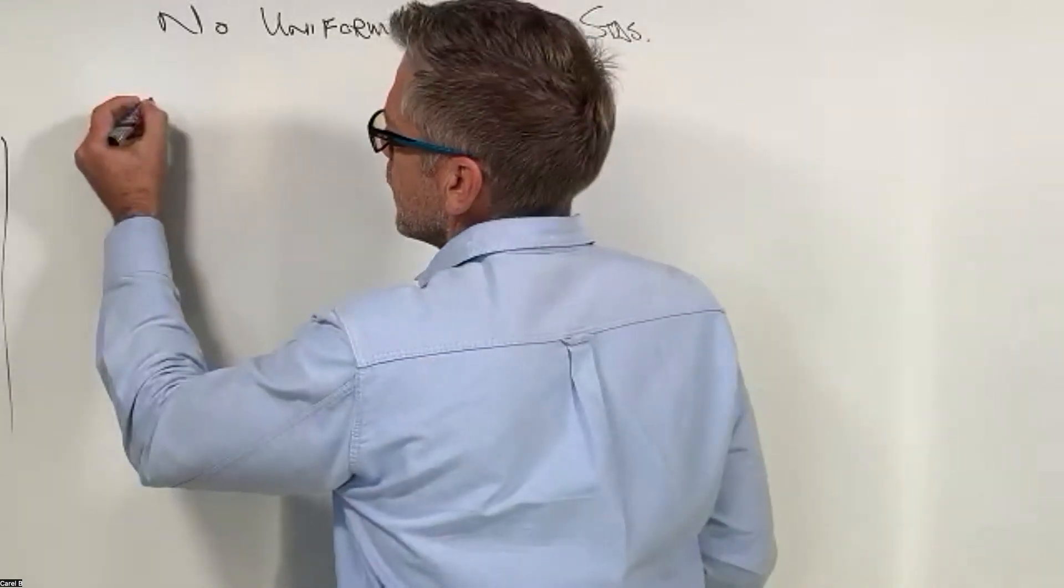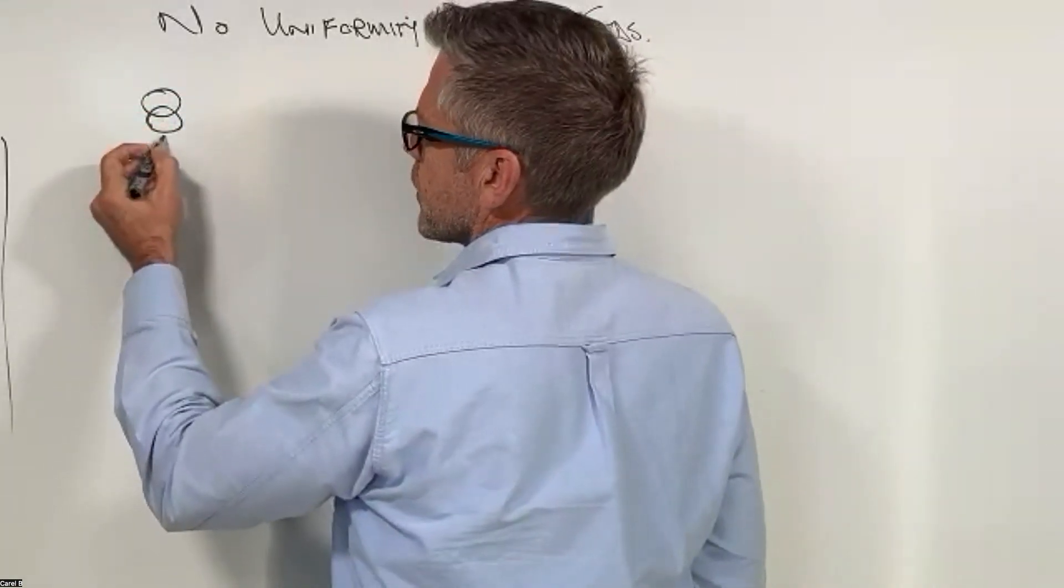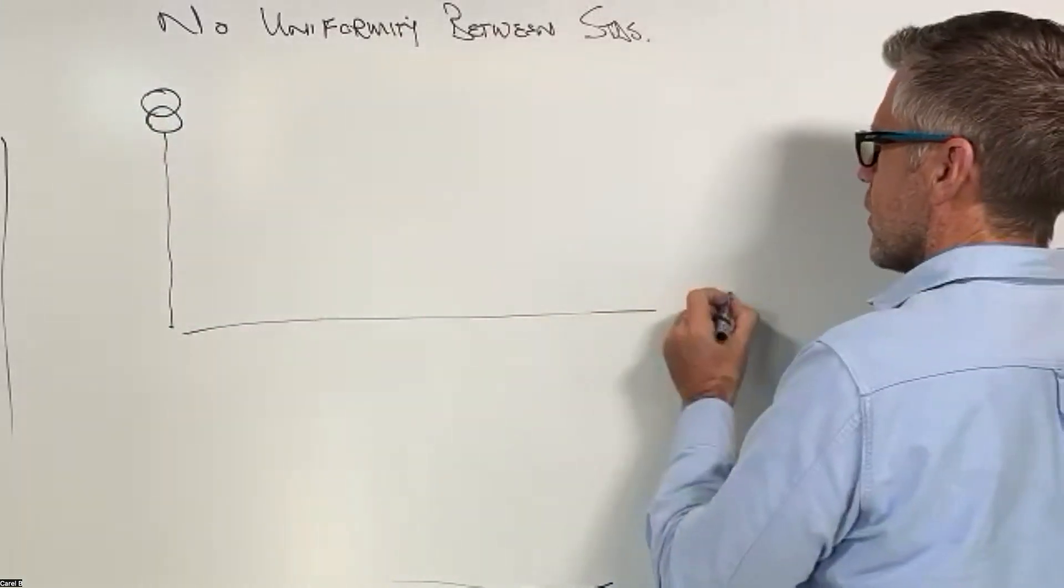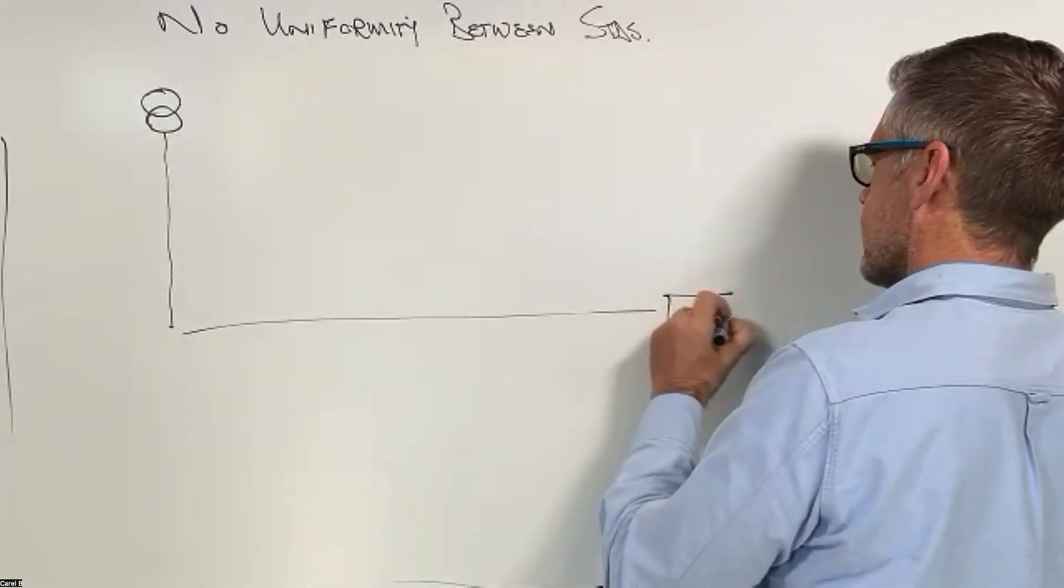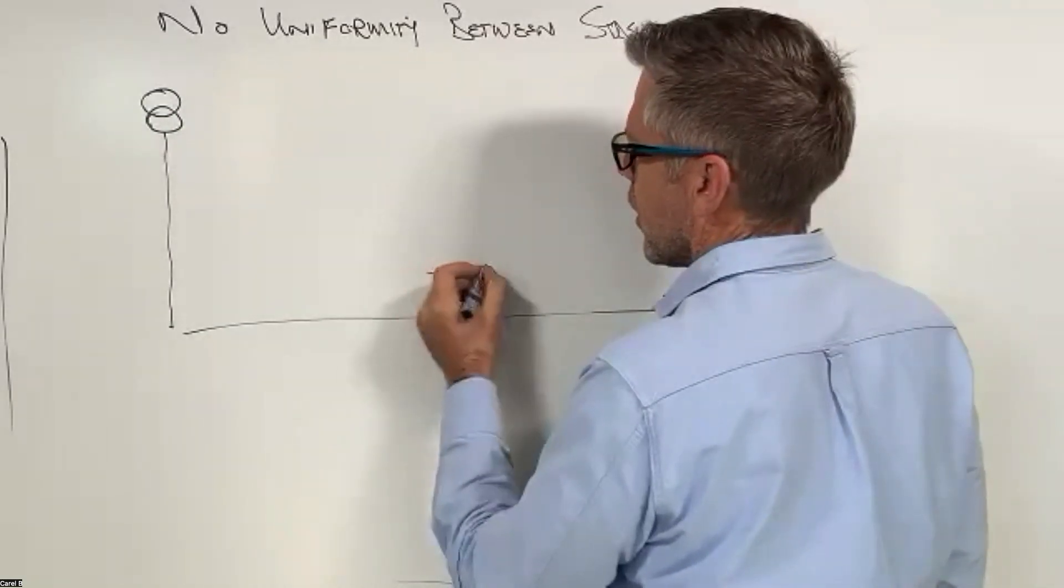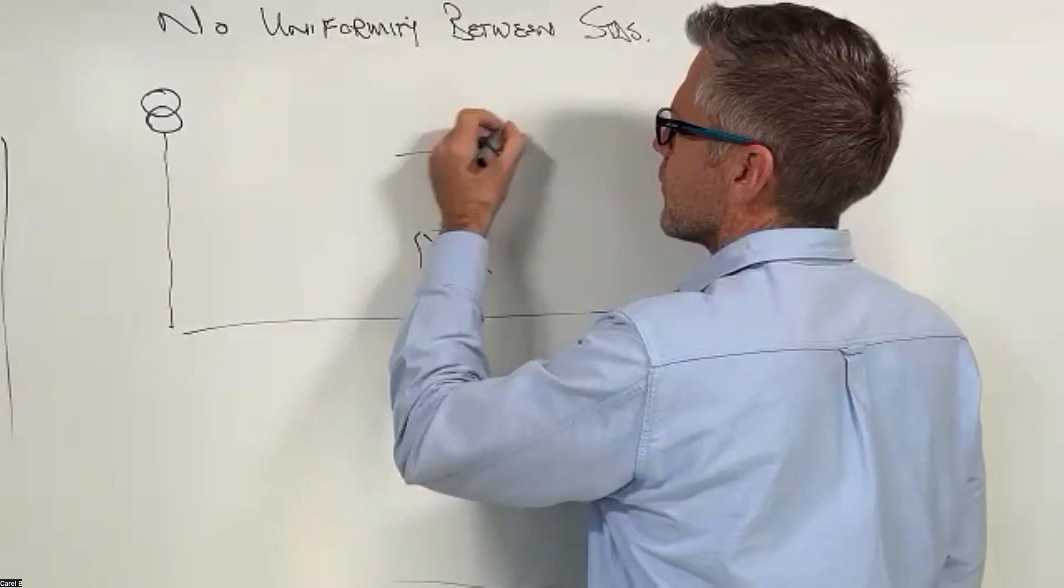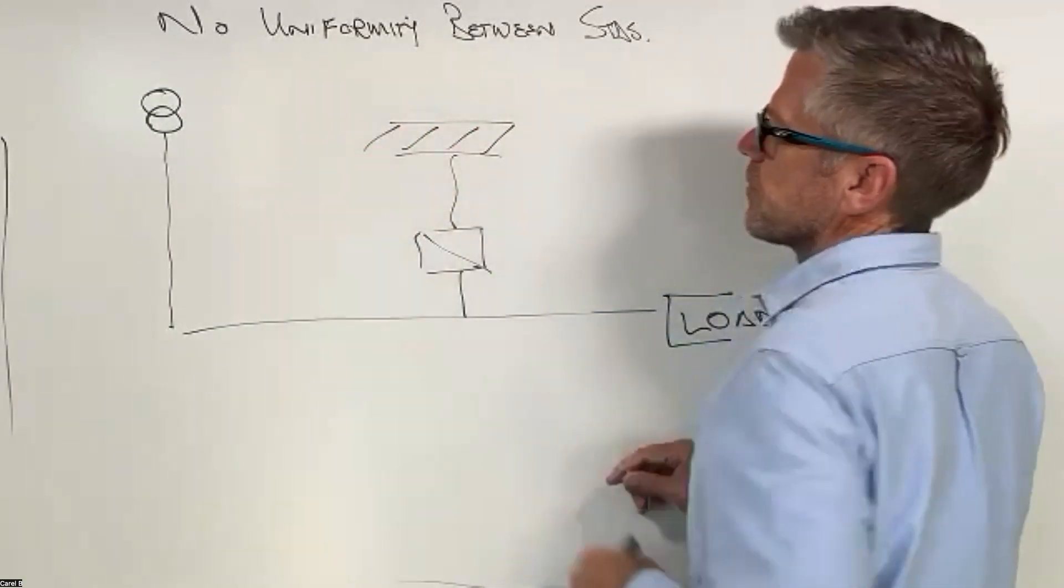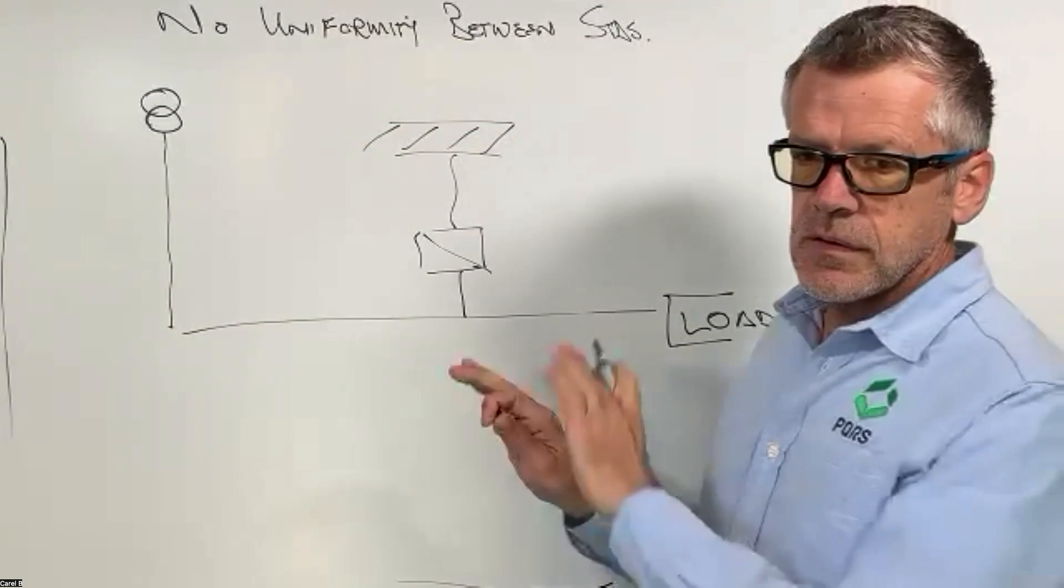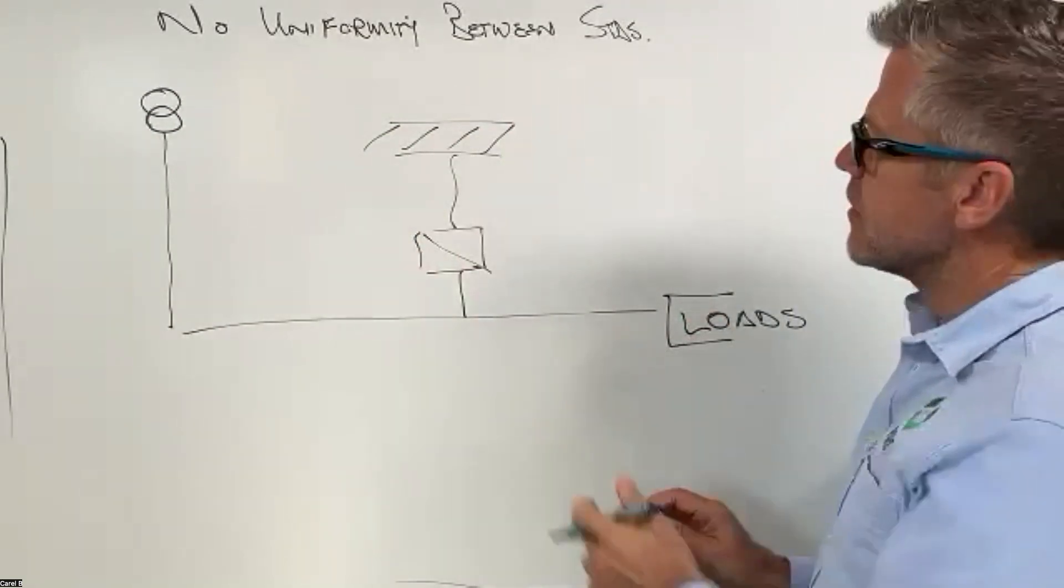Now in a normal installation we have the transformer there, the power runs down, we have our loads on this side. We have our inverter, our grid-tie inverter solar system, loads on this side. Extremely simplified.